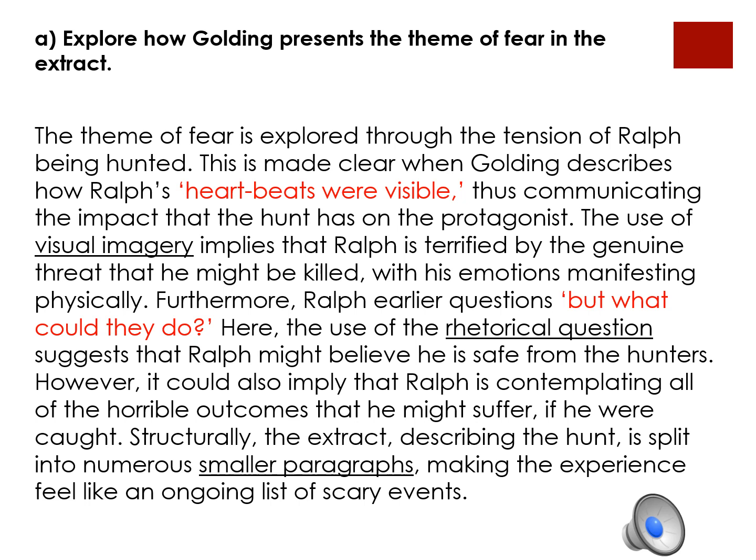For Part A, it's recommended that you aim to write between two and three paragraphs, with each paragraph addressing a different or slightly different response to the question. To talk you through this paragraph style, I'll be looking at the example question: explore how Golding presents the theme of fear in the extract. It's important that students approach these paragraphs in a methodical way, first thinking about a point that specifically answers the question. In this case, it's the fact that the theme of fear is explored through the tension of Ralph being hunted. It's recommended that when planning, students try to find two appropriate quotations in order to make sure their paragraphs are well developed and provide adequate detail.